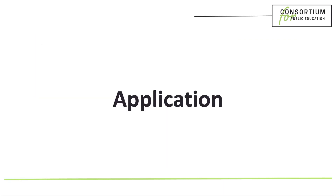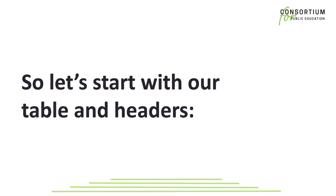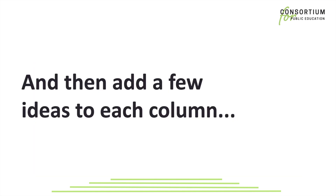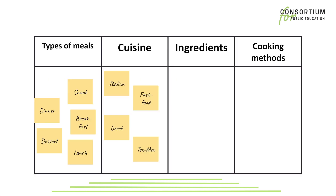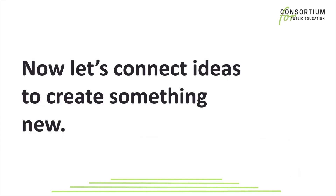Now let's talk application. Here's a scenario: I want to create a new meal at home. So let's start with our table and headers. My column headers are going to be types of meals, cuisine, ingredients, and cooking methods. Then add a few ideas to each column — I'm trying to add as many ideas to each column as possible.